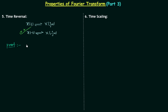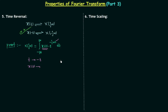To prove this property, I will first write down the formula of Fourier transform: integration from minus infinity to infinity of x(t) multiplied by e^(-jωt) dt. Since we are talking about the time reversal property, we will perform the time reversal operation — we will replace t by minus t in the signal x(t) only. The time reversal operation applies to the signal x(t) only, so there will be no reversal in the integration variable t.